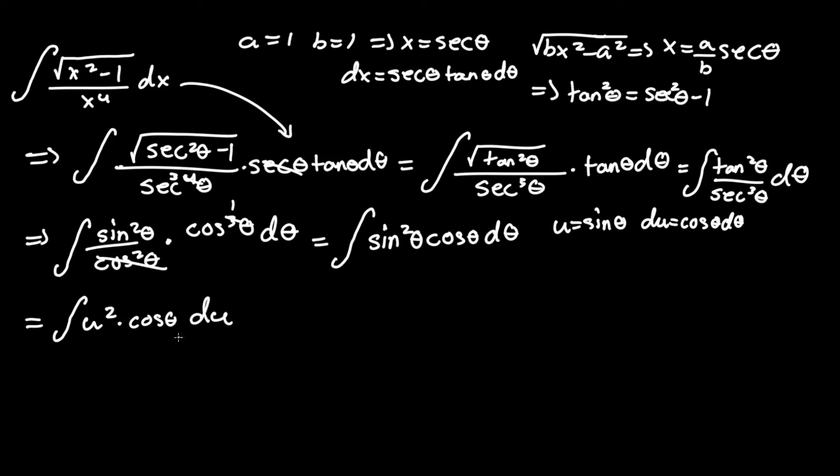With respect to du over cosine theta. The cosine thetas cancel out, and that leaves us with the integral of u squared du. And we know that the integral of u squared with respect to u is just u cubed over 3 plus c.